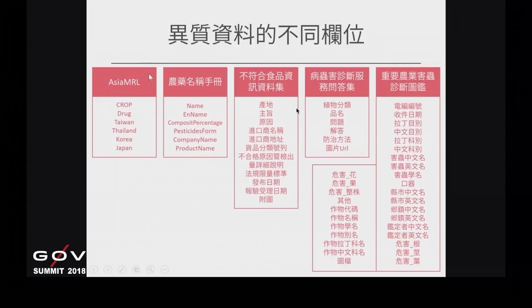我們希望能夠找到一個能夠比較的標準。比較標準的情況是，有一些國家可能有使用到部分農藥，但有些國家沒有那樣的農藥，原因在於不同地域會出現不同的昆蟲或病害，所以實際使用的農藥品項不太一樣。